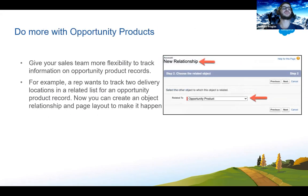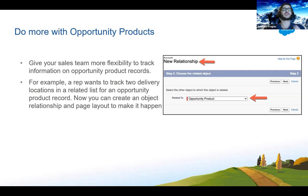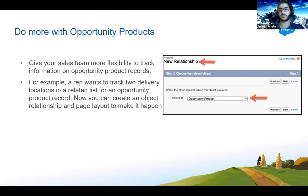You now have the ability to do more with opportunity products. This gives your sales team more flexibility to track information on opportunity product records. For example, a rep can track two delivery locations in a related list for an opportunity product record by creating an object relationship and page layout. Previously this wasn't possible — there were a lot of limitations — and now you have the ability to customize it a lot more.